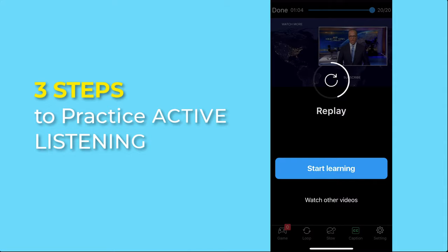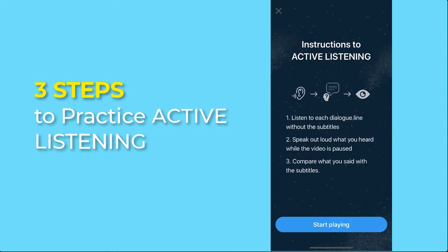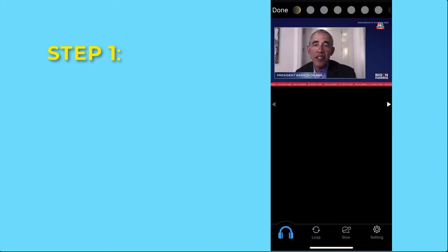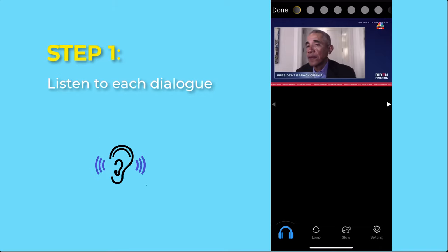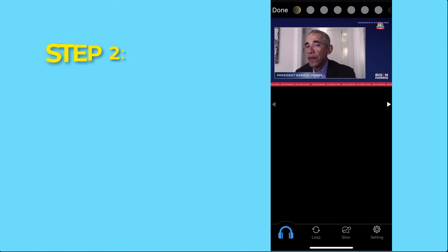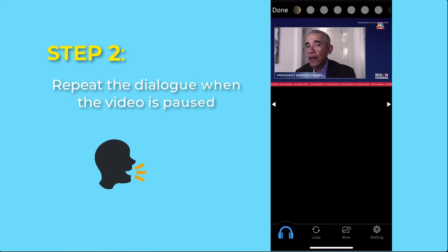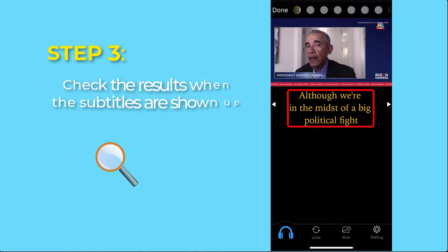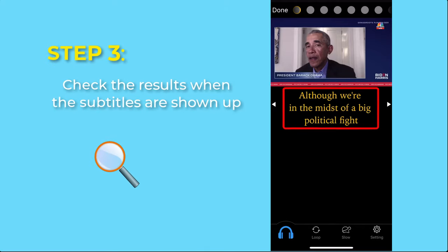Here are the steps to practice the active listening game. Step 1: Listen to each dialogue carefully — you can listen as many times as you want. Step 2: Repeat the dialogue when the video is paused. Step 3: Check the results when the subtitles are shown.